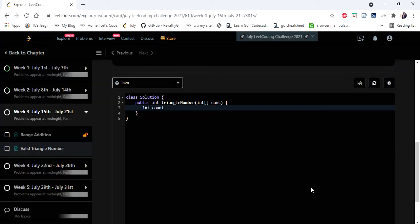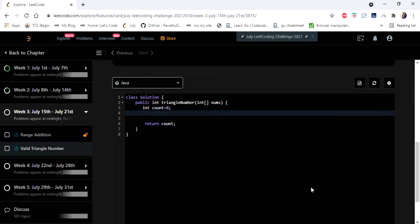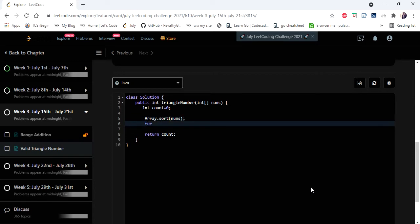As I said, let us declare a variable count, which is what we are going to return as our output. And I'm first going to sort my given array. So once it is sorted, I'm going to assign my three pointers i, j, and k. As I said, my k is going to be the highest number, so we are going to put our k to the last number in the array.